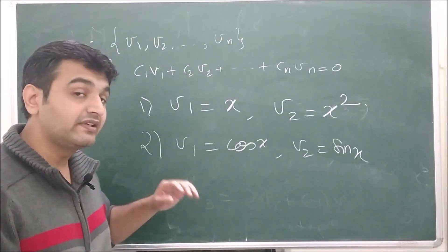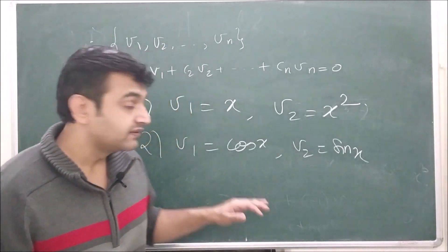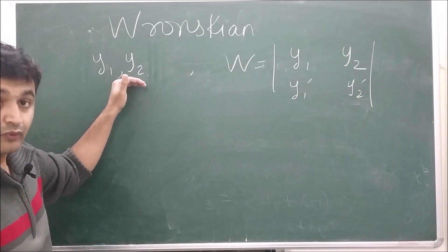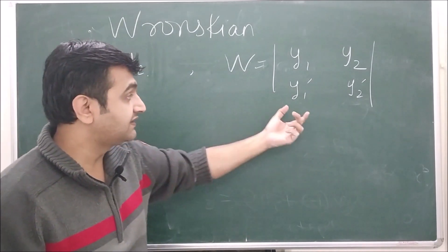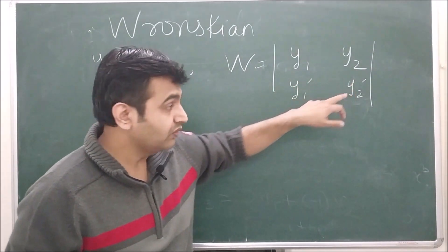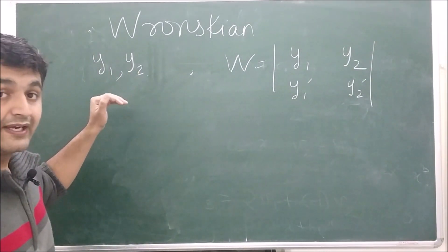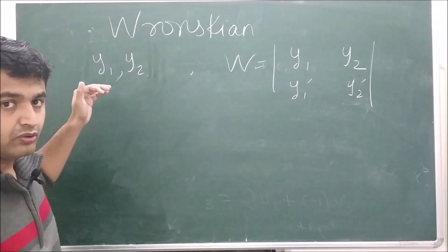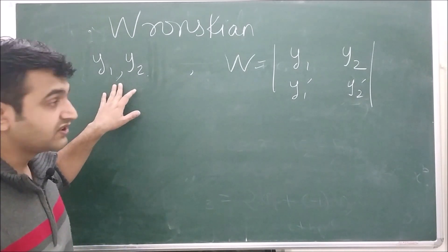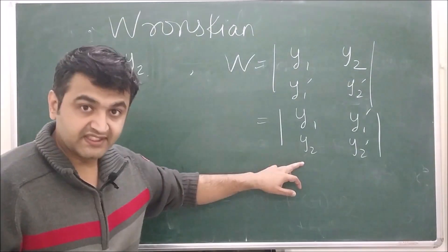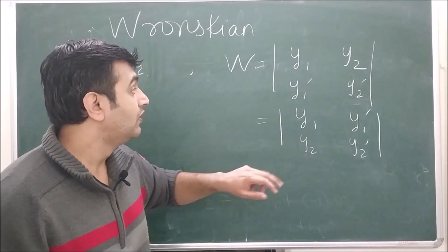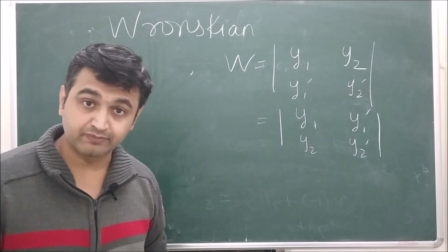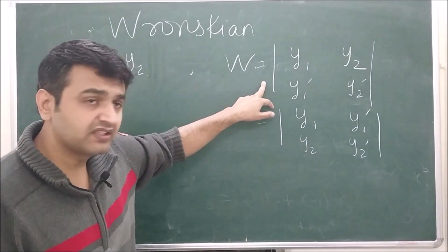I won't prove independence using the definition because I will introduce the Wronskian, which makes it easy. If you have two functions y1 and y2, the Wronskian is defined as the determinant of the 2×2 matrix with first row [y1, y2] and second row [y1', y2']. Some authors write it transposed, but the determinant value is the same, so either form is fine.